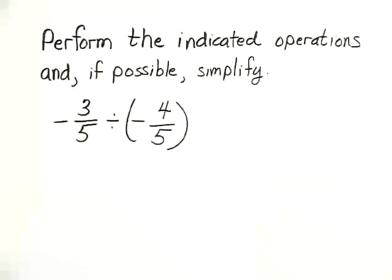Perform the indicated operations and, if possible, simplify. Here we're multiplying negative three, or dividing negative three-fifths by negative four-fifths.